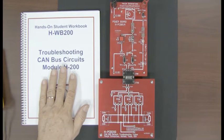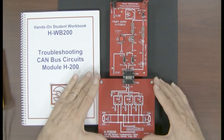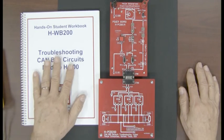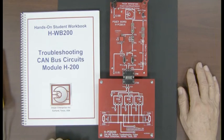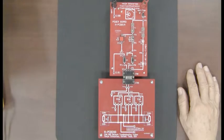This is the workbook. When you buy the CAN bus program H-200, you'll get one of the circuit boards, you'll get a workbook, and an instructor guide with all the answers, and a resistor bag with the appropriate parts to insert the different types of problems that you will have to deal with.